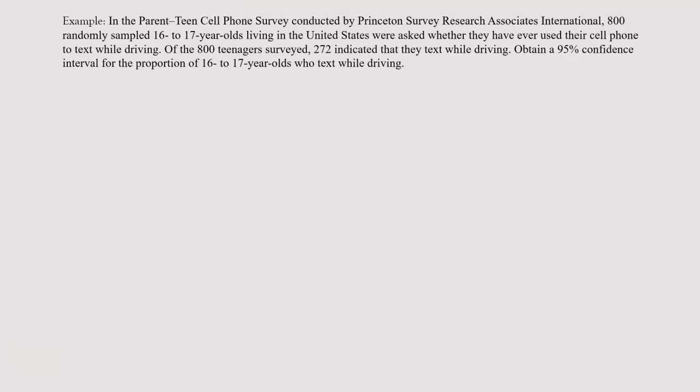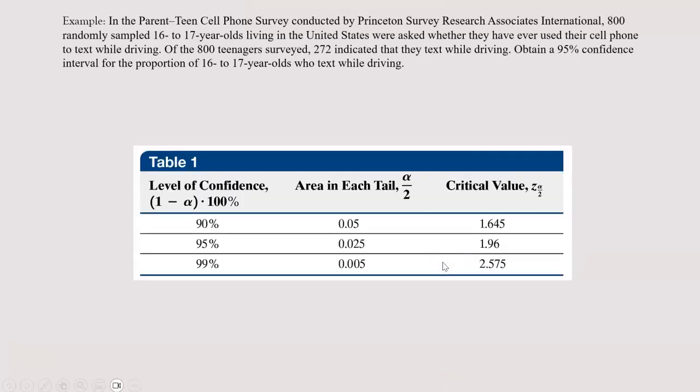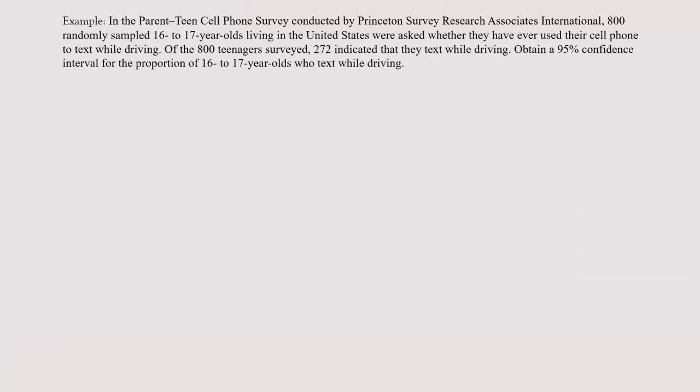What we want to do is calculate the confidence interval for the proportion of 16 to 17 year olds who text while driving. I have the critical value table here, and since we're using a 95% confidence interval, according to the table, our critical value is 1.96. So keep in mind that our critical value is 1.96.